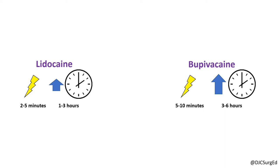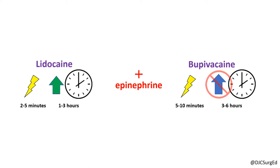The addition of epinephrine produces local vasoconstriction and allows higher doses to be used, as the anesthetic stays locally in the tissue for a longer duration due to delayed absorption. However, epinephrine does not increase the duration of effect for bupivacaine, but may decrease systemic absorption.